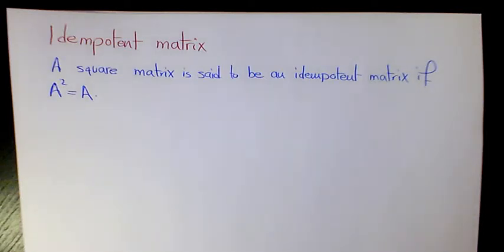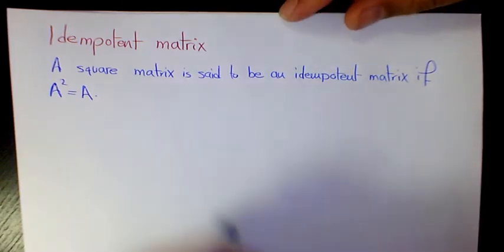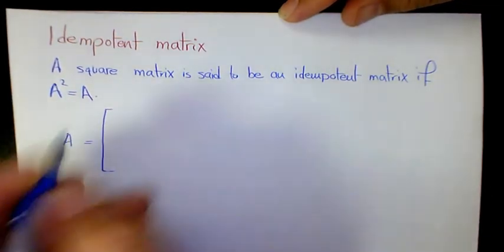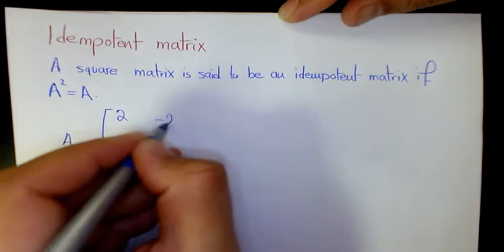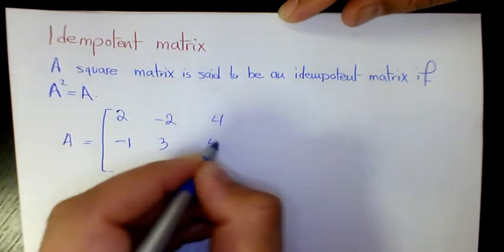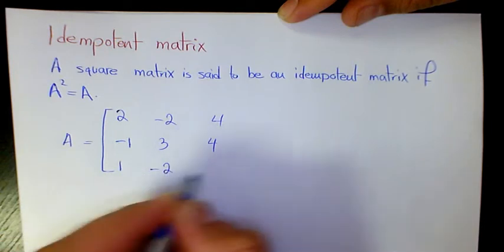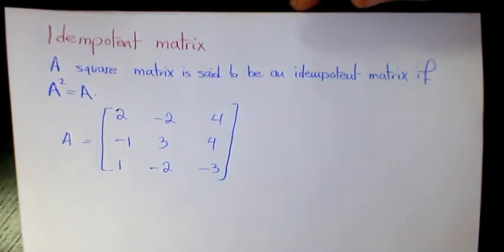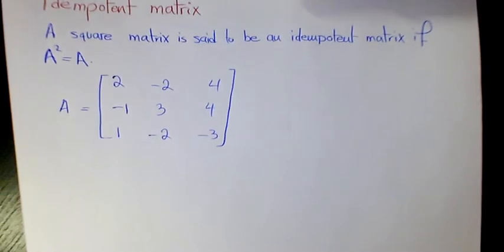What's up guys, this is Mas here, welcome to another video. In this video I want to show you what is an idempotent matrix. A square matrix A is said to be an idempotent matrix if A squared equals A. For example, when we have a matrix like two, negative two, four, negative one, three, four, one, negative two, negative three, we need to find out if it's an idempotent matrix or not.